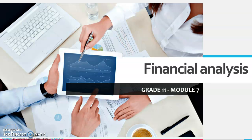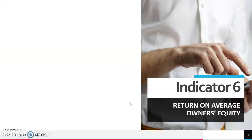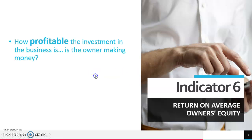Okay Grade 11s, I've made a PowerPoint specifically for module 7 and I'm going to cover the most important formulas or indicators and analysis that you would need for partnerships. Let's start with indicator 6 — the return on average owner's equity. This one you've been doing since grade 10, so it should be familiar to you.